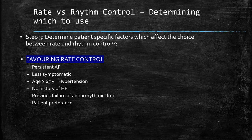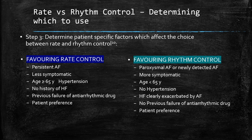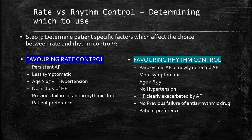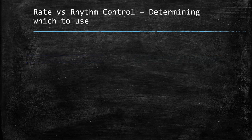Factors favouring rhythm control include paroxysmal or newly detected AF, the patient being more symptomatic, age below 65, no hypertension, heart failure exacerbated by atrial fibrillation, and no previous failure of antiarrhythmic drugs. After deciding on rate or rhythm control, we move on to selecting appropriate pharmacological agents, after determining whether electrical cardioversion will be used.